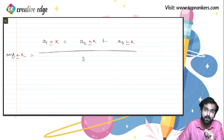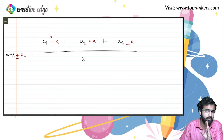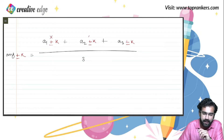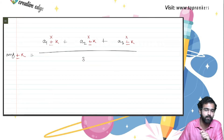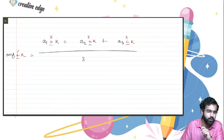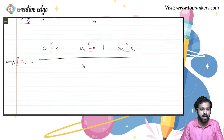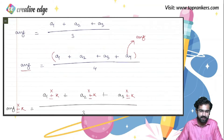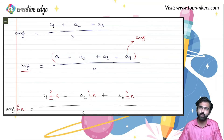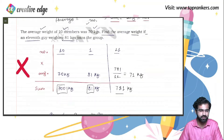This is true for multiplication as well. If you multiply all observations by the same number, the average will also multiply by that number. If you understand these three properties, you will be able to crack these questions very efficiently.